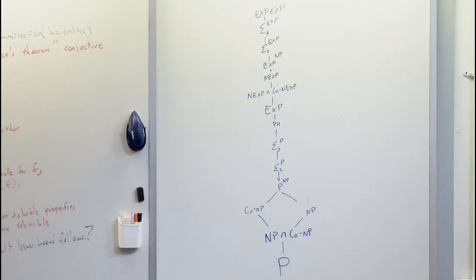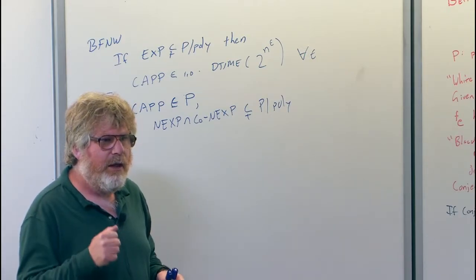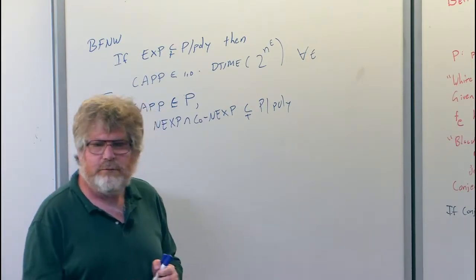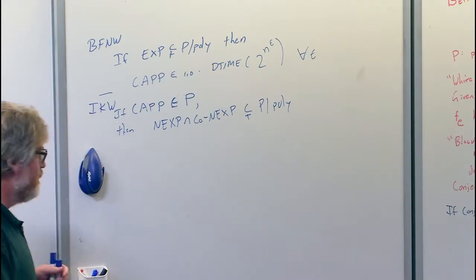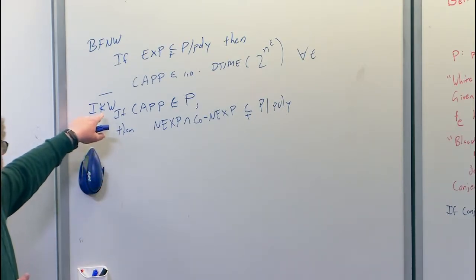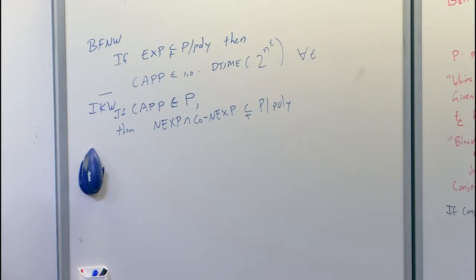Q: What about CAPP? A: CAPP is the Circuit Approximate Probability Problem — given a circuit, estimate what fraction of inputs the circuit accepts, up to some additive error. It's sort of a complete problem for BPP, actually a little more like promise-BPP, because we don't insist we always have bounded error. It's just that if we could do this, we can say when there is bounded error our approximation is informative. If the approximation is like 0.49, we really don't know whether the algorithm usually accepts or usually rejects.